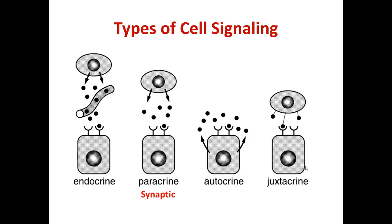There are five major types of cell signaling. Endocrine cell signaling is basically long-distance signaling where a cell sends a signal that travels through the bloodstream to reach a cell in a distant place in the body.